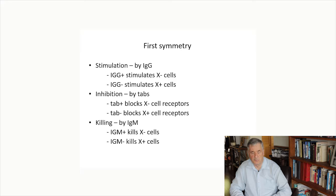Symmetry in stimulation is exerted by IgG molecules. IgG plus stimulates X minus cells. IgG minus stimulates X plus cells. Inhibition is performed by tabs. Tab plus blocks X minus cell receptors. Tab minus blocks X plus receptors. And killing is the same for IgM. IgM plus kills X minus cells and IgM minus kills X plus cells. So in all cases, we've got these molecules interacting with either X plus or X minus, and it's all symmetrical.